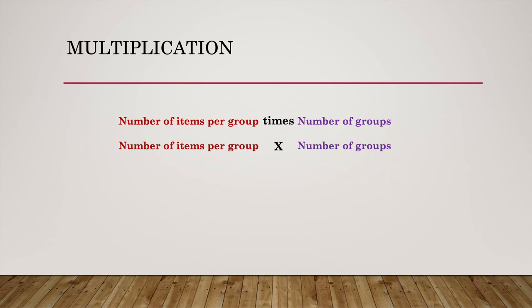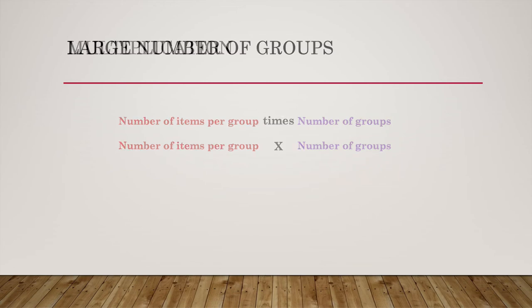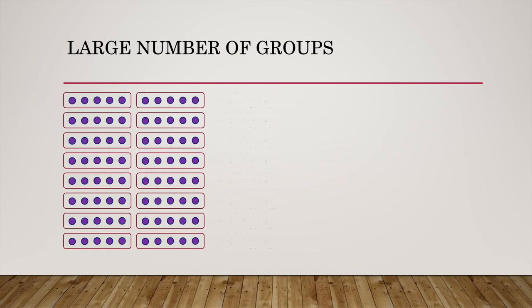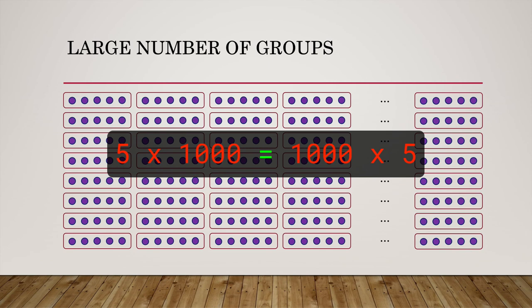But multiplication is much easier because let's say you had a thousand groups and there were five in each group. You can just write a thousand times five, and that's much shorter and gives you the answer much quicker than if you had to do five plus five plus five a thousand times. All right, so that's it. Until next time.